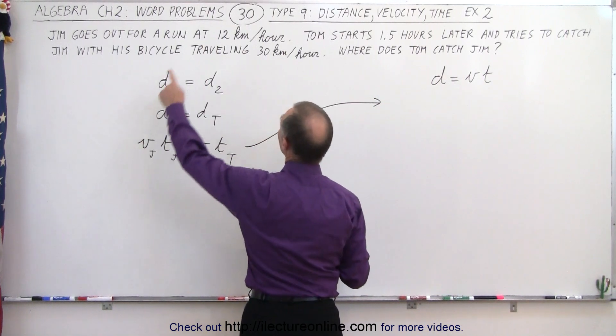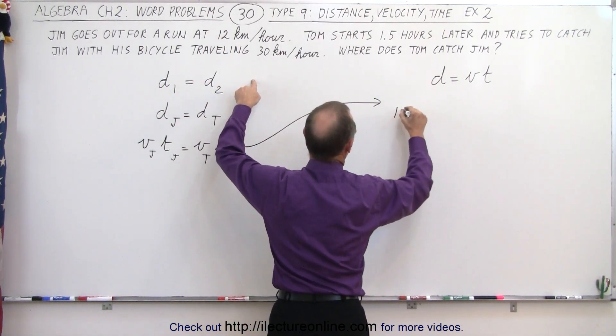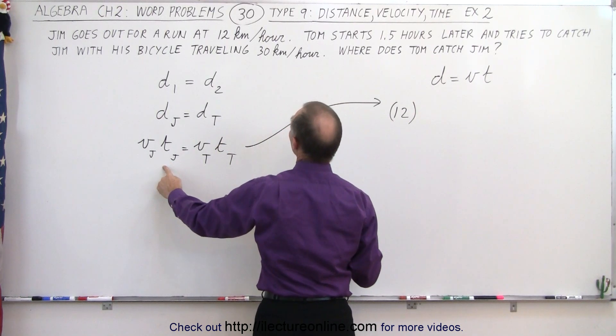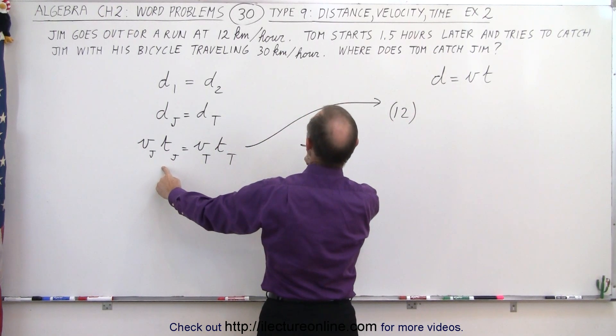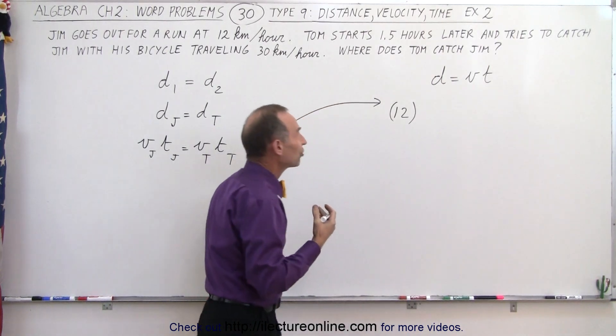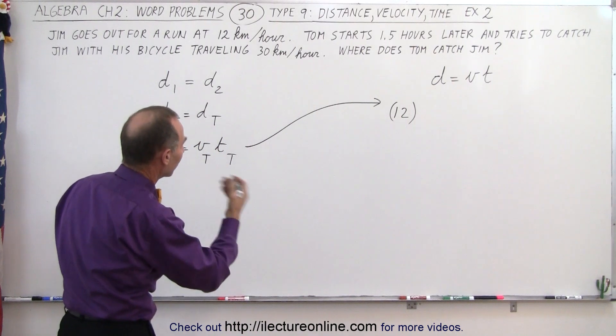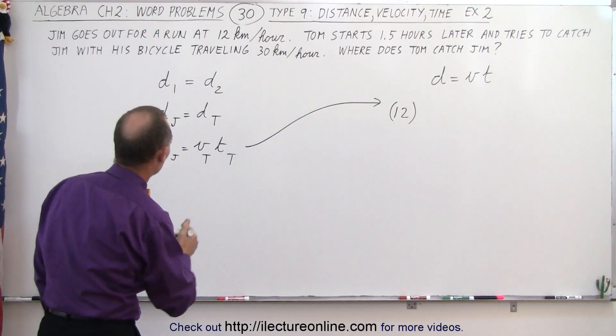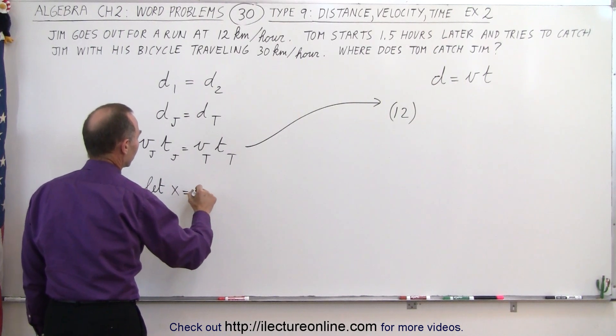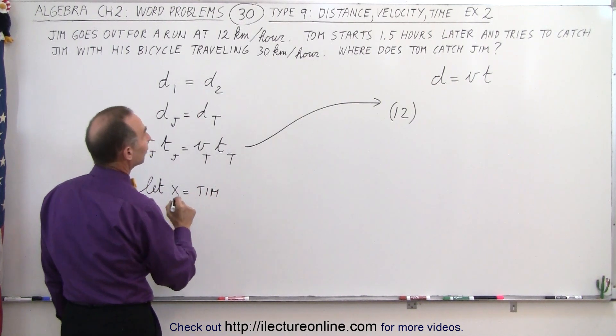The velocity traveled by Jim is 12 kilometers per hour. So we write 12 and the time traveled by Jim, well, we don't know how long it will take for Tom to catch Jim. So what we're going to do is we're going to let x equal the time traveled by Tom.